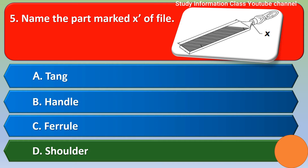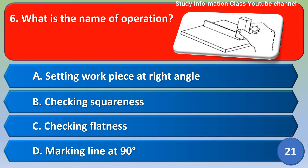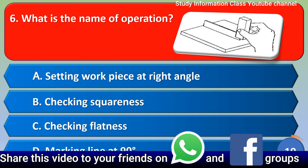Next question: what is the name of the operation shown? Option A) setting workpiece at right angle, B) checking squareness, C) checking flatness, D) marking line at 90 degrees. The correct answer is option C, checking flatness.